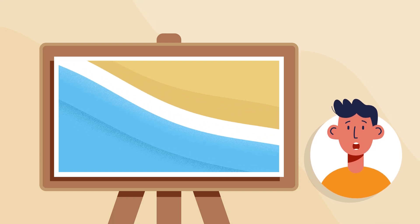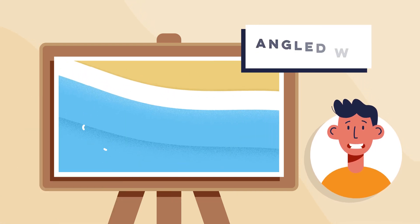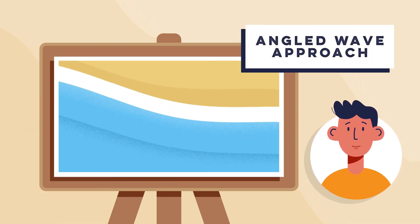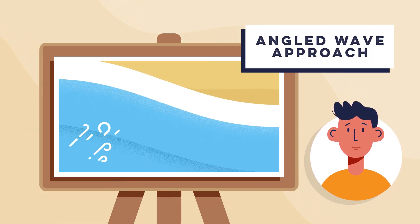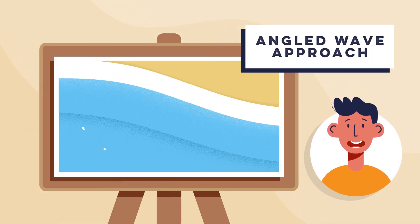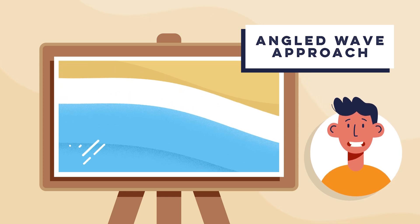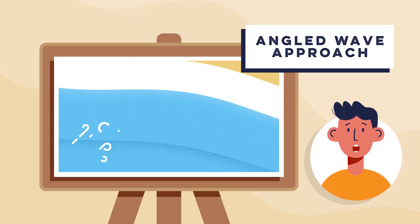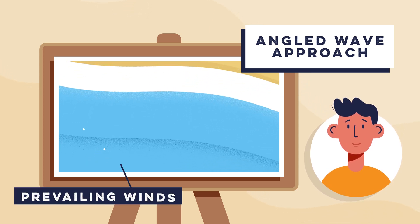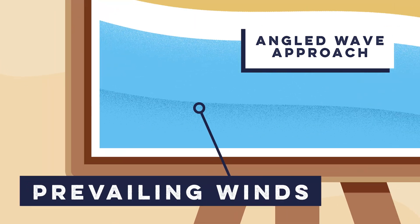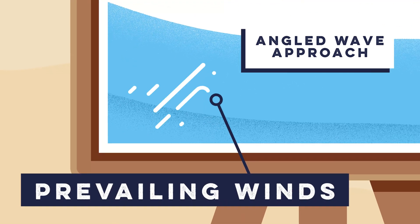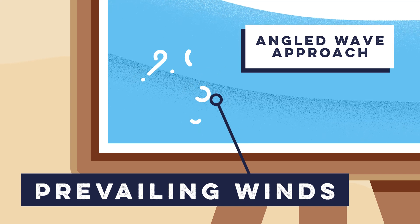Step one is the angled wave approach. It begins with waves hitting the shore, but they don't just crash head-on — they approach at an angle, guided by the prevailing wind.